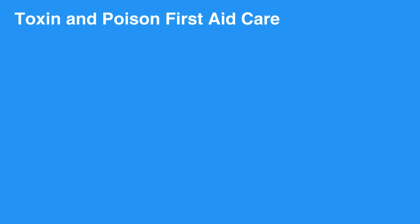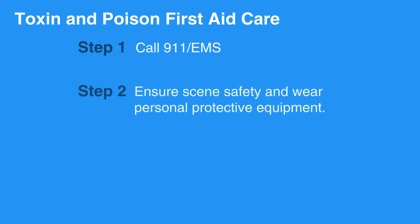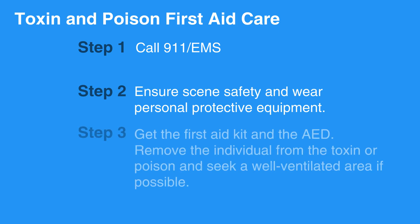To provide first aid care for toxin and poison exposure, first call 911-EMS. Ensure scene safety and wear personal protective equipment. Get the first aid kit and the AED. Remove the individual from the toxin or poison and seek a well-ventilated area if possible.